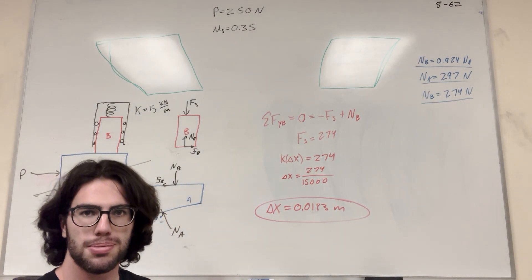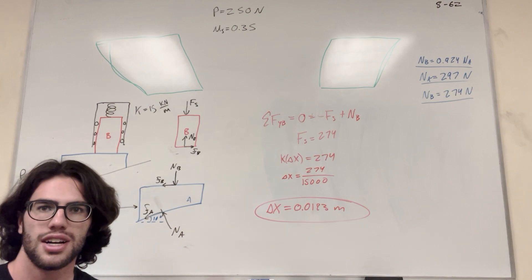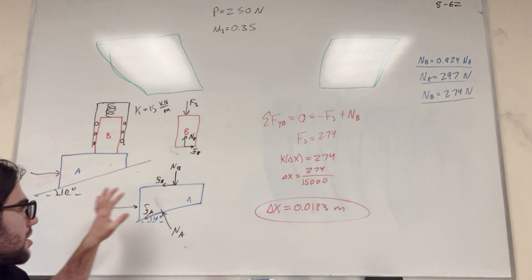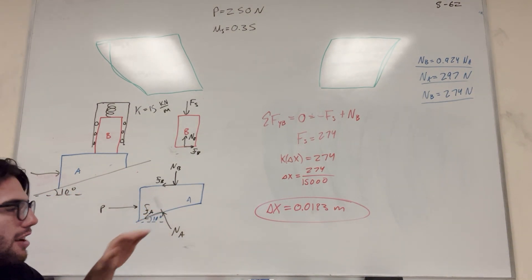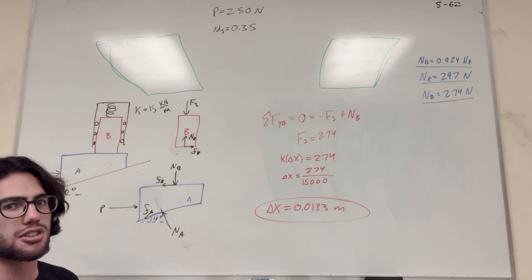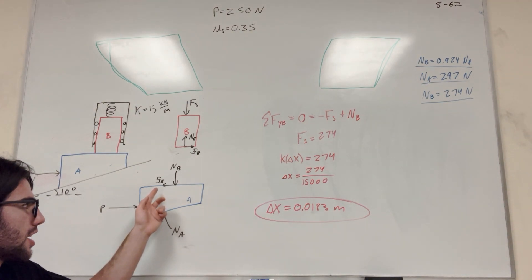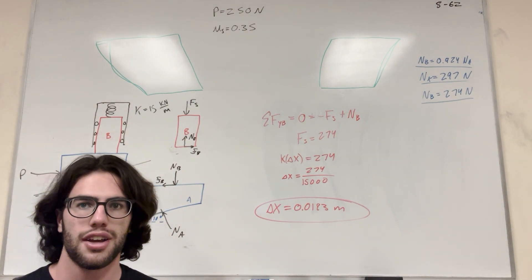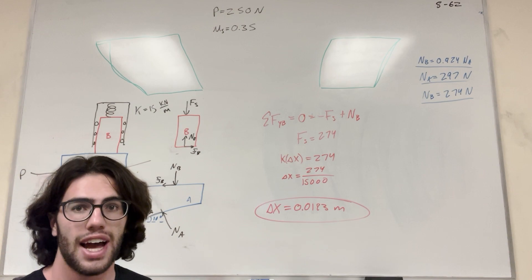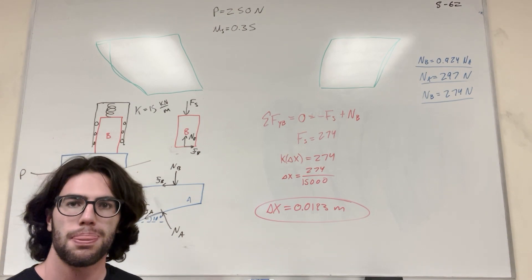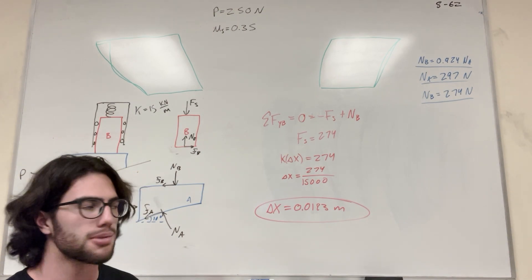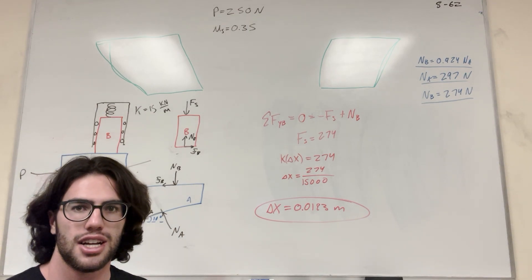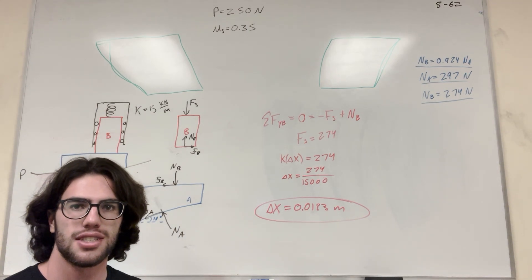And there you go — that's how you solve this problem. It's a pretty long one, but you just have to make sure to make a nice force body diagram and really count the unknowns. Friction is just part of normal, so you can consider that as one unknown. Go look at your statics homework, and I'll see you in the next one. Peace.